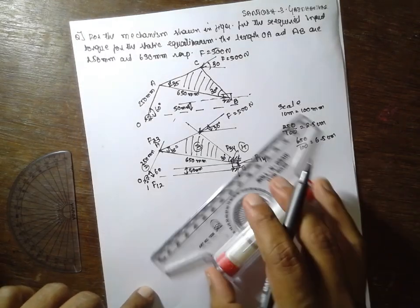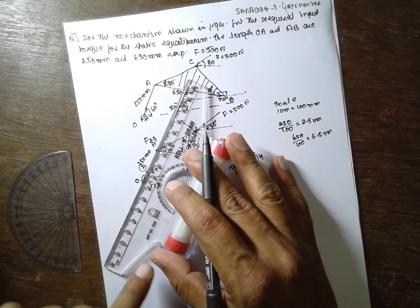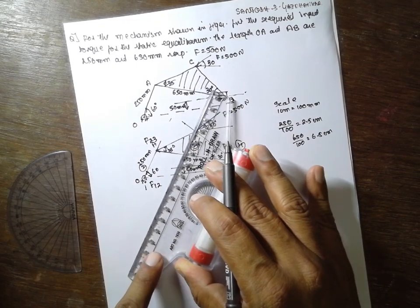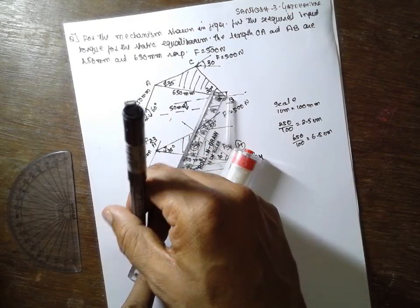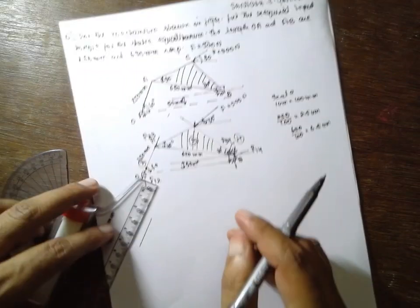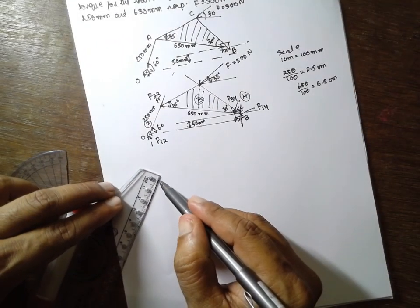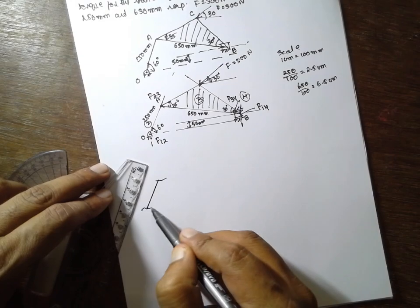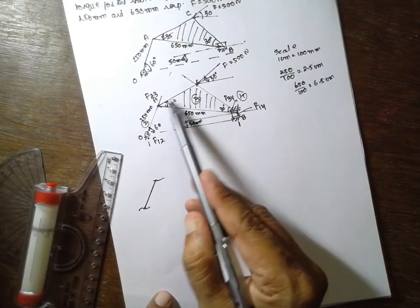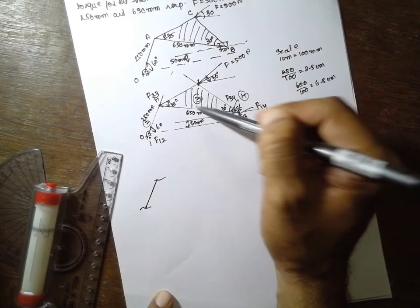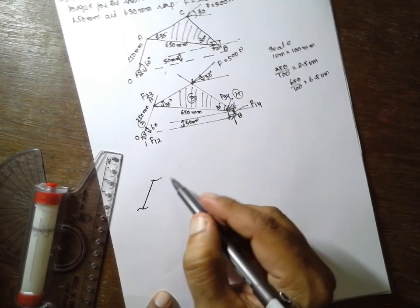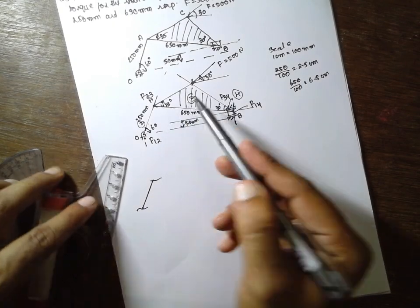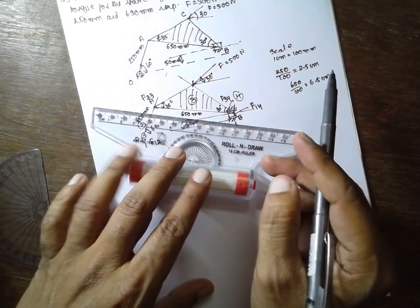Next, I will draw the free body diagram. First, I will draw this part, 2.5 cm. Therefore, we don't know where the forces are acting here. Next, I will consider this part.